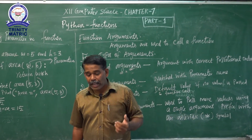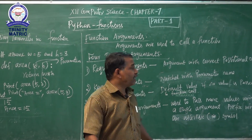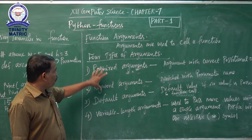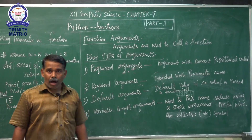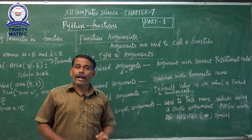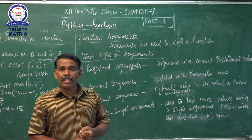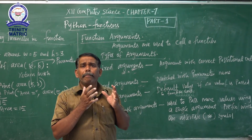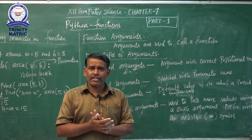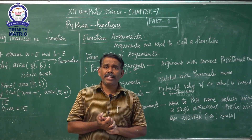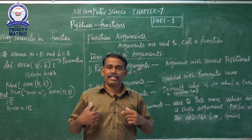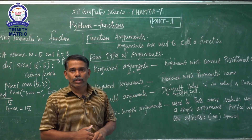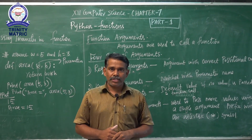In the next class, I will give examples for these four types of arguments, anonymous functions, scopes of functions, and built-in functions. This will be discussed in Function Part 2. Thank you, students.